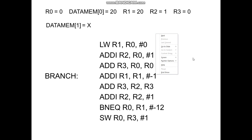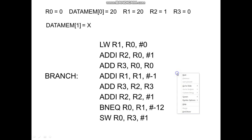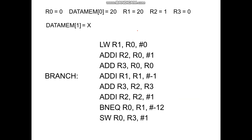Hi everyone. In this video we are going to run a program on the RV32i processor to find the sum of first 10 natural numbers. If we want to find the sum of first 20 natural numbers, then we need to store the value 20 in the data memory location 0. We need 4 registers to do this program.